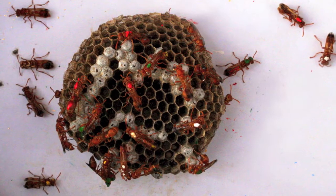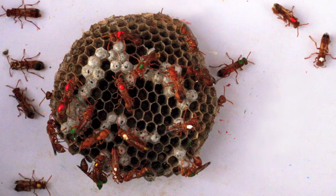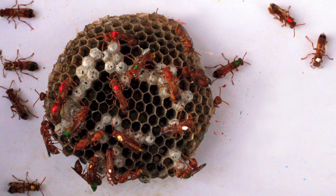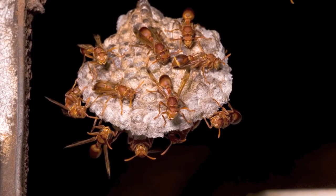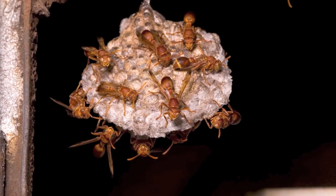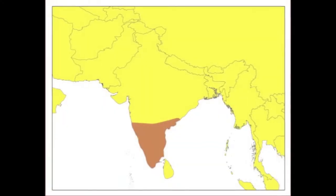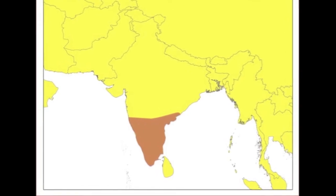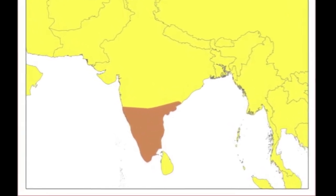That is what I have looked at in my work. I have worked on a species of paper wasp known as Ropalidia marginata. These are social wasps, so they live in groups — they live in colonies. They inhabit a huge part of South Asia, but I have sampled several such colonies from southern India.